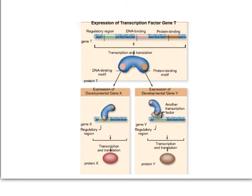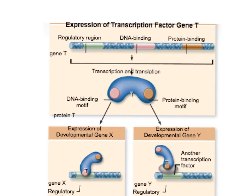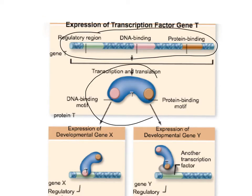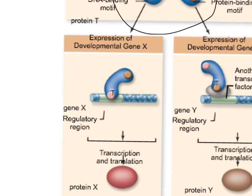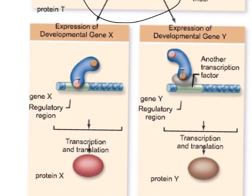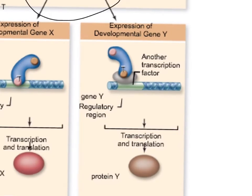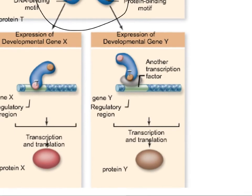Let's talk about the first mechanism — how transcription factors can change the place and timing of activation of developmental genes. Here we have a gene region with regulatory regions where transcription factors bind. A transcription factor normally binds to one specific gene, such as gene X, activating its expression and resulting in transcription and translation of the coded protein. But that transcription factor can acquire a new function and now bind to the regulatory region of a new gene Y, possibly mediated by some new protein, still resulting in the activation of gene expression and translation of that new protein.